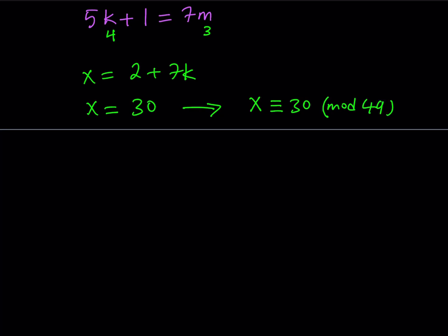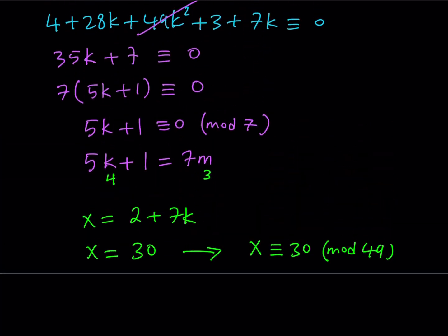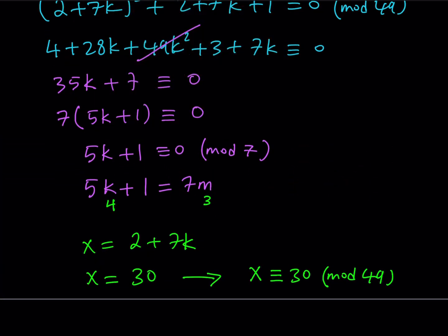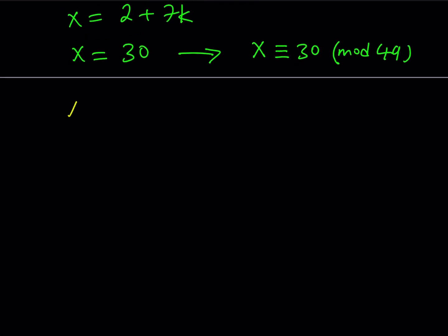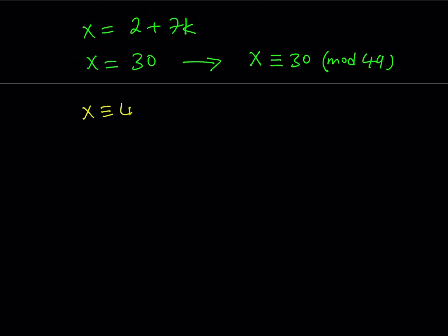This means that any number in the form 30 plus 49 something, you know, 49 times an integer, will be a solution to this congruence. So let's go ahead and find the other solution, if there is any, and then we'll put it together at the end. Now, what is next? Well, we also found that x can be 4 mod 7. So let's go ahead and use that one here. x is congruent to 4 mod 7. Now, what is that supposed to mean? Well, it means that you can write x as 4 plus 7n, where n is an integer. Again, you can turn the congruence into an equation by using an additional variable.